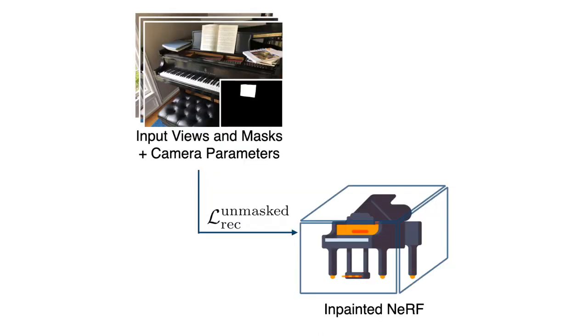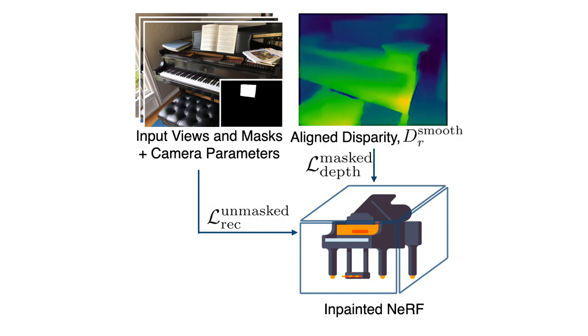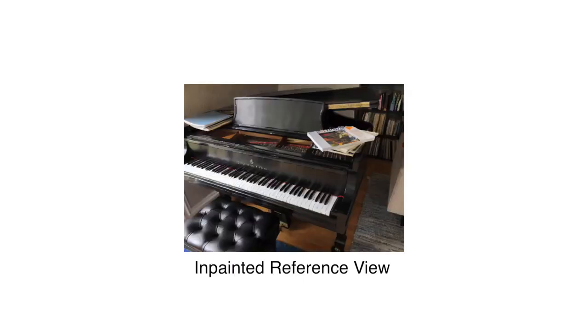So far, to supervise the inpainted NeRF, we use the ground truth colors of the unmasked pixels to supervise the unmasked regions of the NeRF. We supervise the geometry of the masked region by the aligned disparity of the reference view. Up to this stage, the appearance of the masked region has remained underfit.